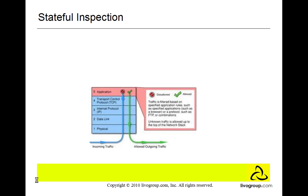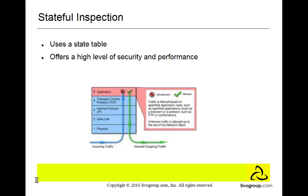The last type we'll discuss is stateful inspection. Unlike packet filtering which uses rules or ACLs, stateful inspection uses a state table. It is similar to a nosy neighbor — the nosy neighbor knows what's going on in the neighborhood at any time of the day. Stateful inspection offers a high level of security and performance. However, it is hard to administer and very expensive. It is a third generation firewall.